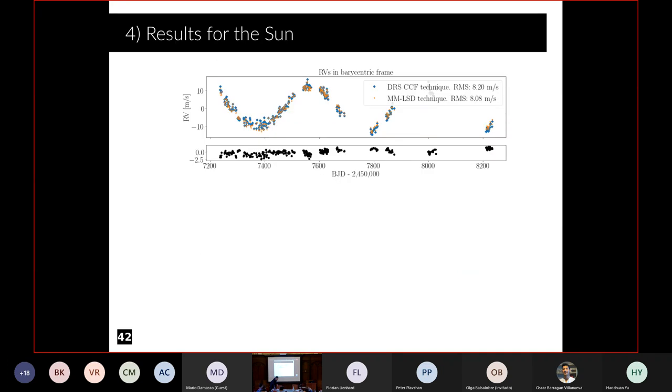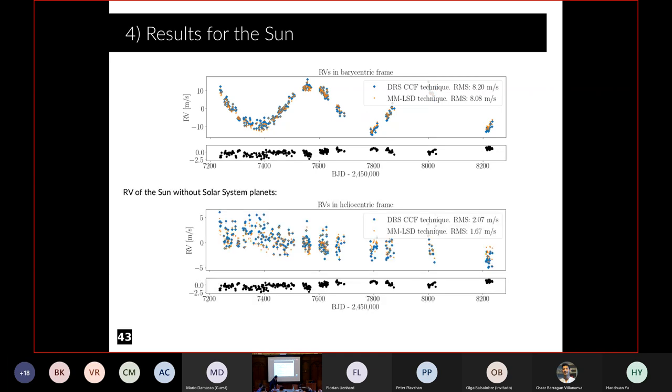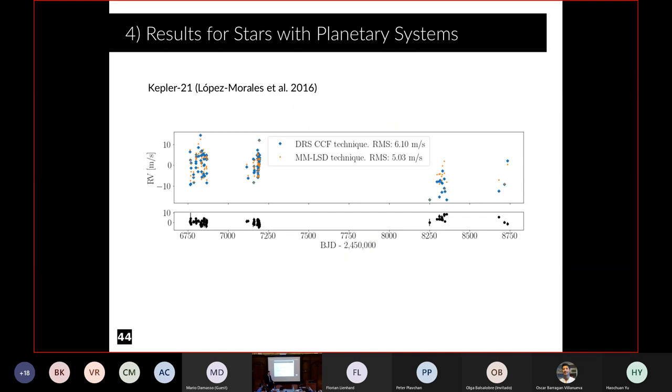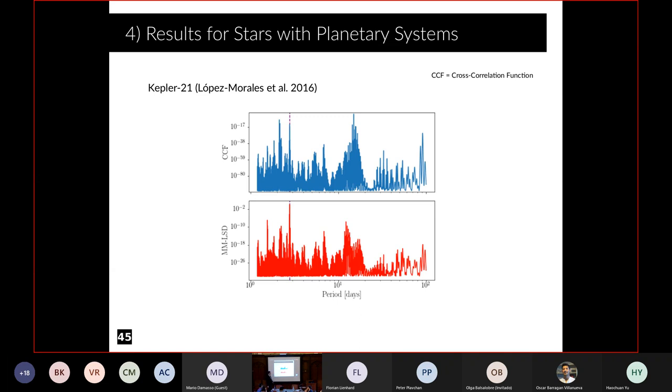Some results. This is the Sun in the barycentric frame. To compute this, we assumed the heliocentric correction to be unknown. So we removed the solar system planets. We have lower scatter. You can see this here, lower scatter for the MM-LSD technique. Then I want to show you Kepler-21 as well. There's a paper by Lopez Morales. Again, we get lower scatter for MM-LSD. If we compute the periodogram, the signal is here where this violet line is. The signal is very much stronger in the periodogram of the MM-LSD RVs compared to the DRS RVs. You can see there's this forest of lines which was attributed to stellar activity in this paper, but we don't have it in MM-LSD.